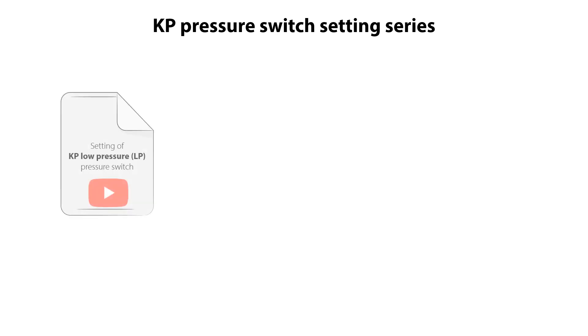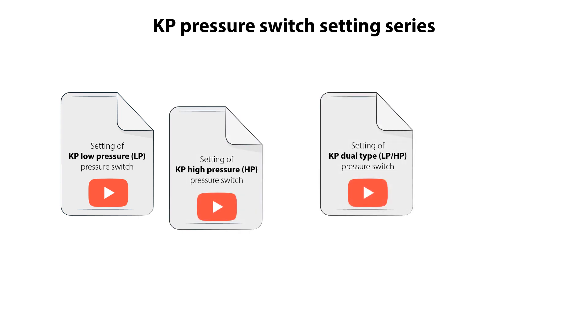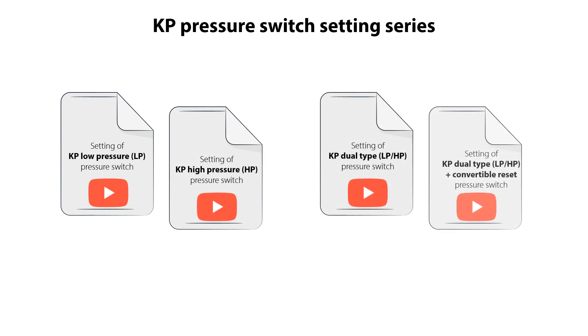In this series of videos, we will show you how to do setting of the following KP Pressure Switch types: the low pressure type, the high pressure type, and the dual type without and with convertible reset.